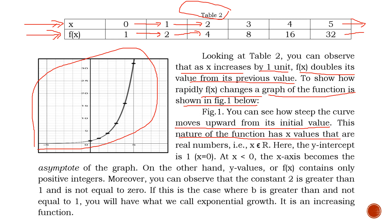This nature of the function has x values that are real numbers. Your x values are elements of all real numbers because it starts from negative infinity to positive infinity, including 0. The y-intercept is 1. Because if your x is 0 — we always assume x is equal to 0 when looking for the y-intercept — when your x is 0, your f of x is equal to 1. So the value we get when we input 0 as the value of x will be the y-intercept.